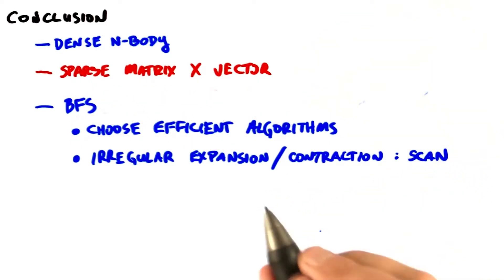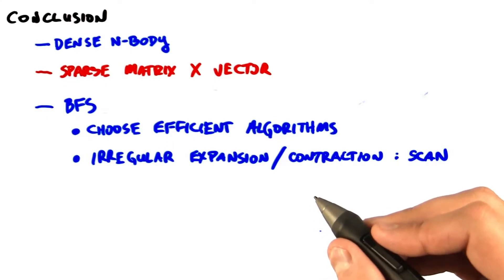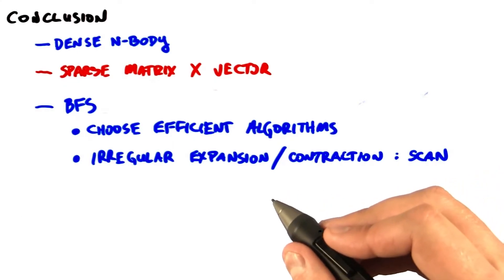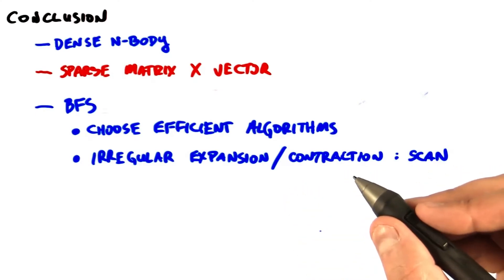Breadth-first traversal. Choosing the most efficient parallel algorithm is perhaps the most important thing you can do. For large problems, a superior algorithm in terms of asymptotic work complexity will nearly always beat even an optimized, more expensive algorithm.